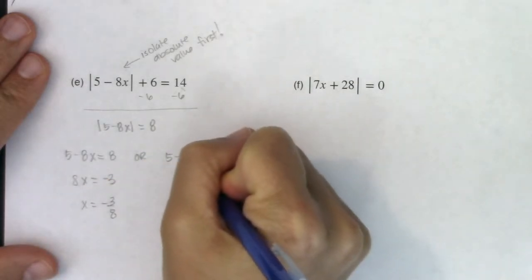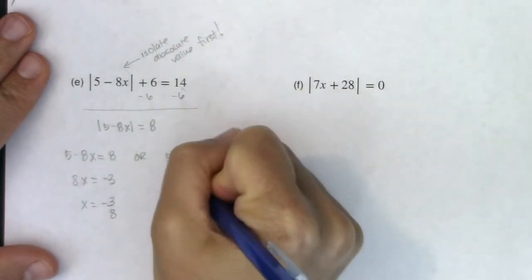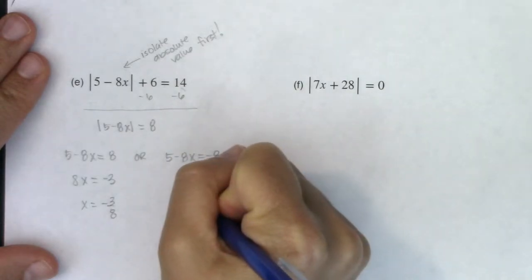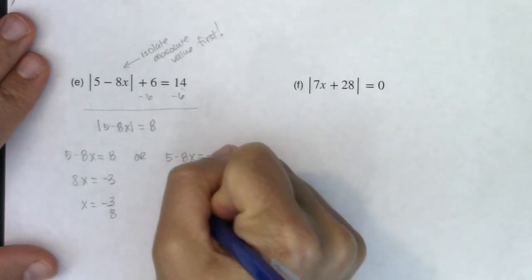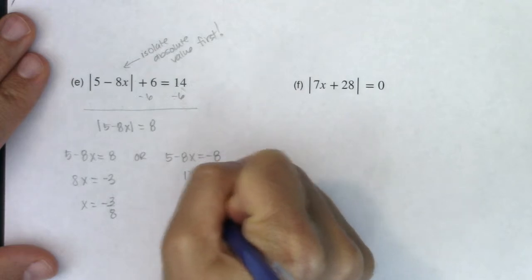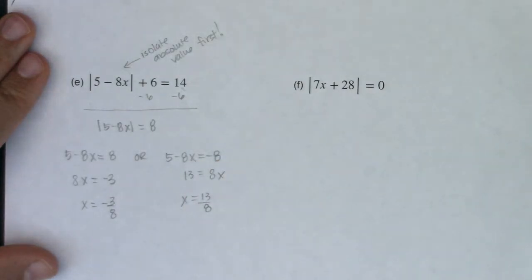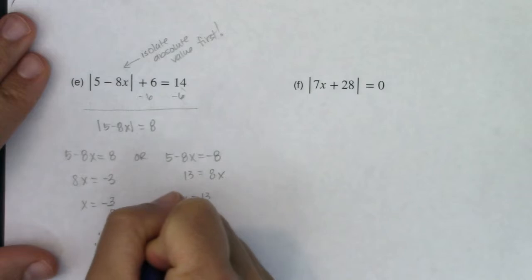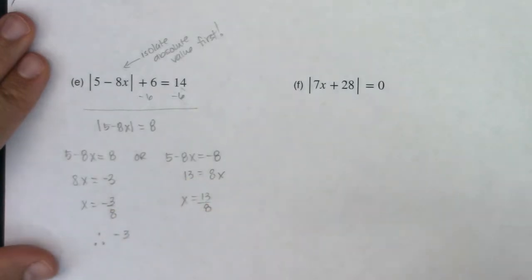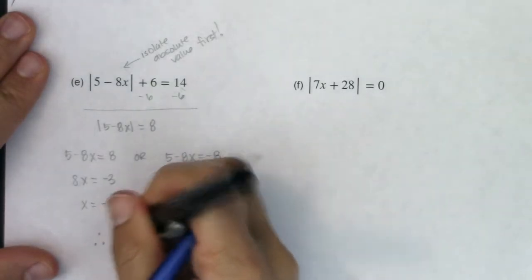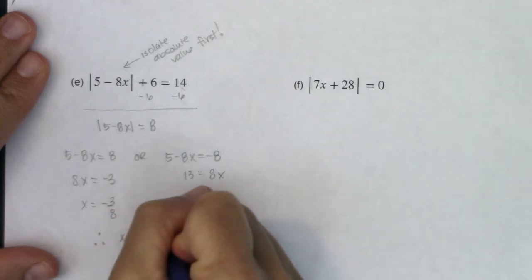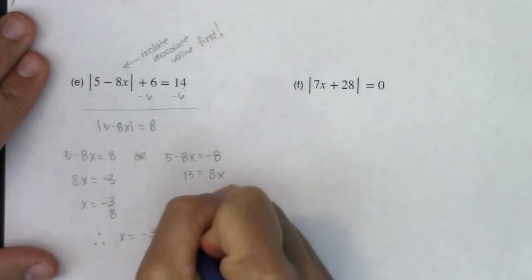And if I do the second equation: moving 8x to that side gives 8x equals 13, then dividing both sides by 8, x equals 13 eighths. So for this problem I have two solutions: x equals negative 3 eighths, or x equals 13 eighths.